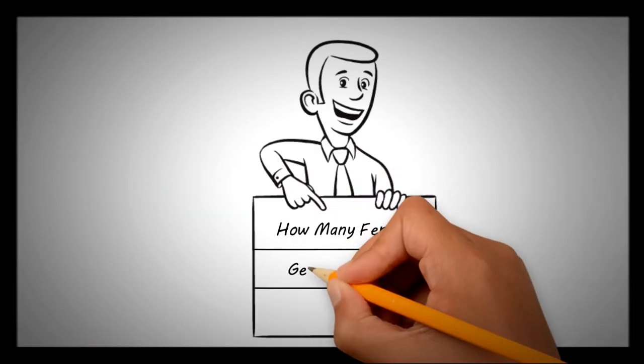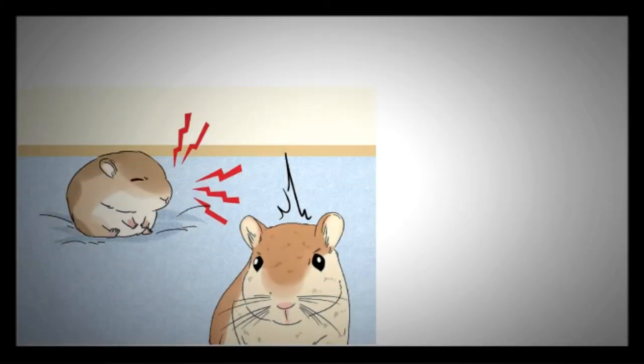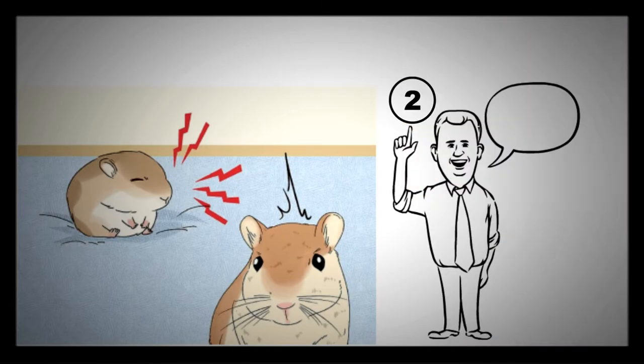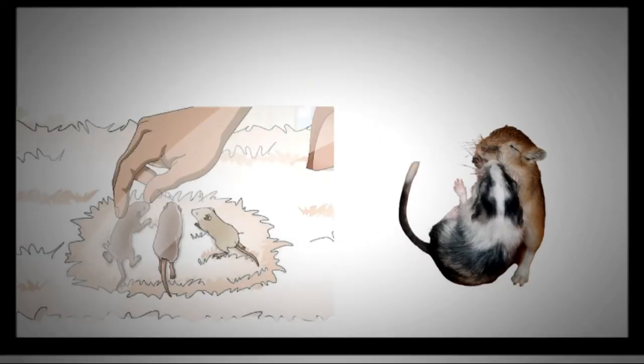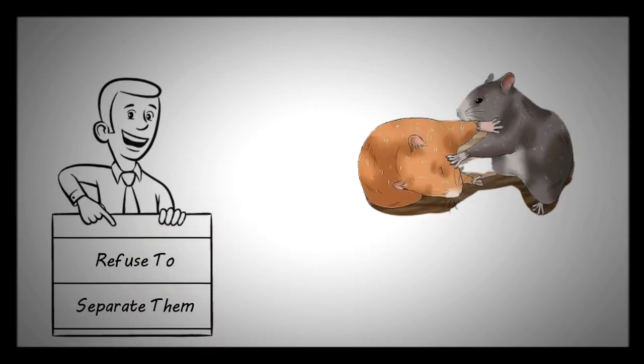How many female gerbils can live together? Female gerbils are more aggressive than the male. Therefore, only two of this sex can live together. Keeping more than two female gerbils in a cage could result in declining, and if you refuse to separate them, conflict might erupt.